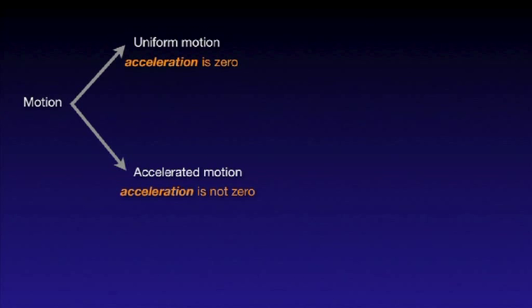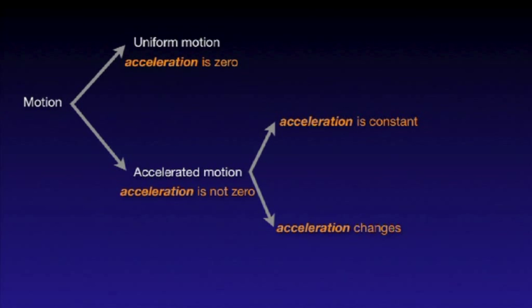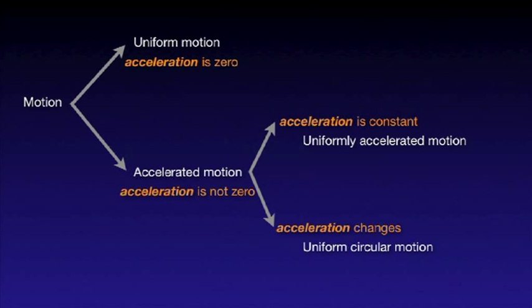We distinguish here two subtypes: one in which the acceleration vector is non-zero but constant during the motion, and another in which the acceleration changes during the motion. An accelerated motion in which the acceleration is constant is called uniformly accelerated motion. Two typical examples of motion in which the acceleration changes are uniform circular motion and simple harmonic motion.